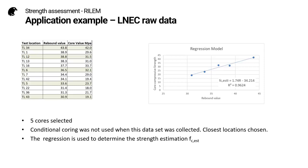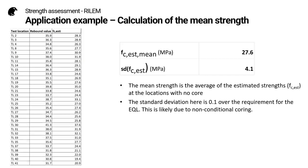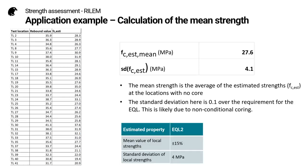I've used a simple linear regression as my model. Here we can see the mean strength for the test region calculated from the estimated strengths at locations where we don't have core information, and we can see the standard deviation is 4.1 — it's 0.1 over the requirement for the estimation quality level. But this is probably due to the fact that we don't have real conditional coring here.